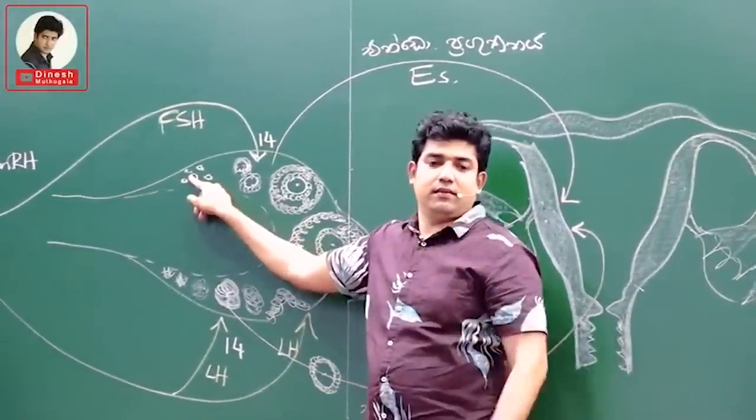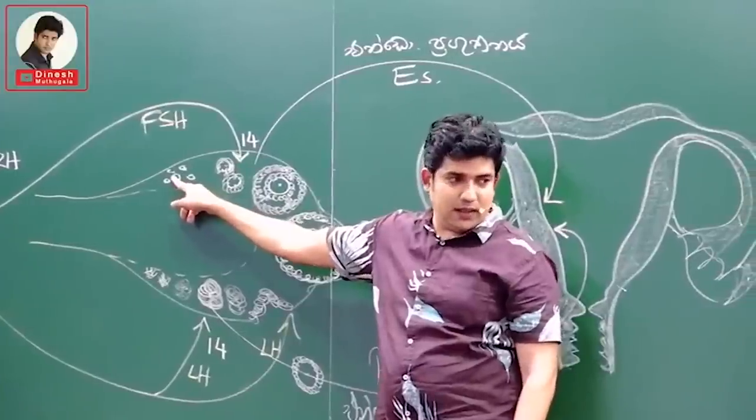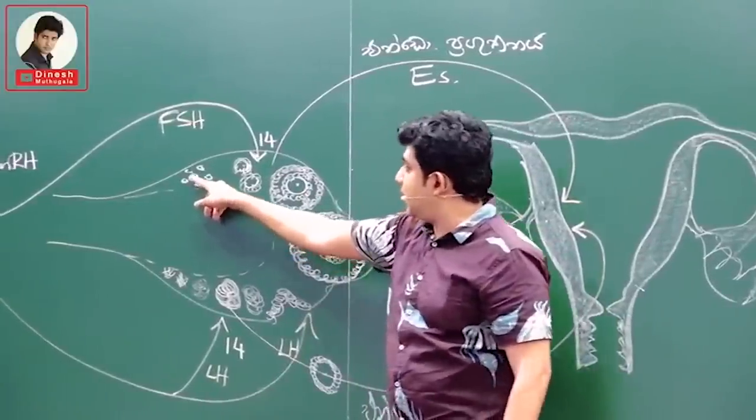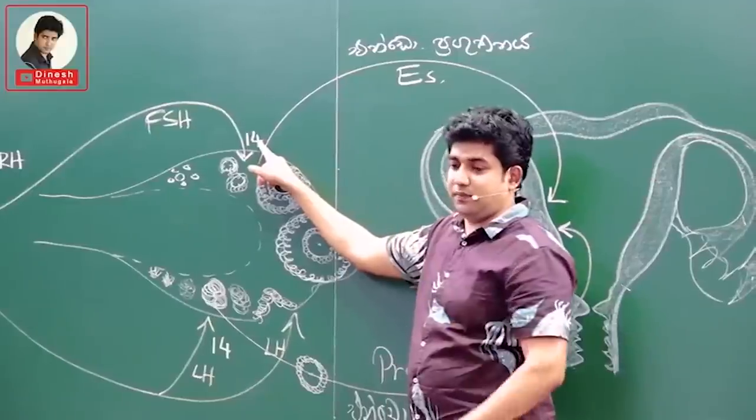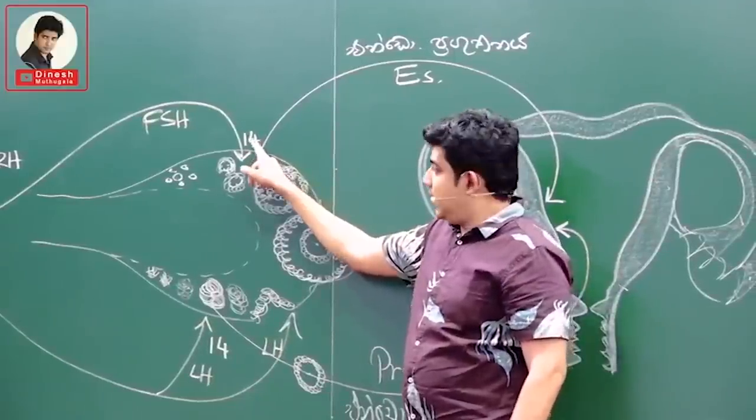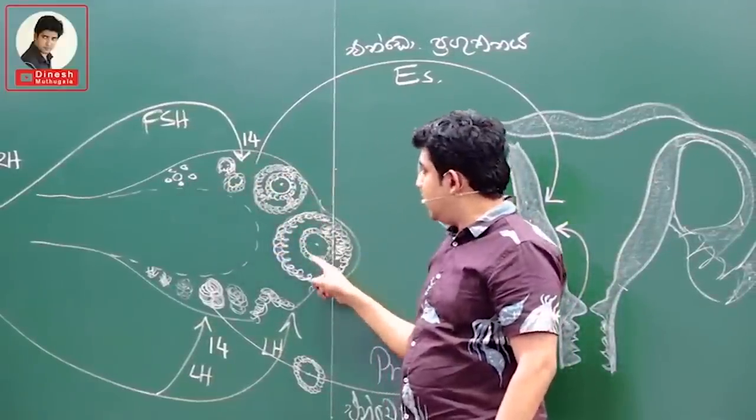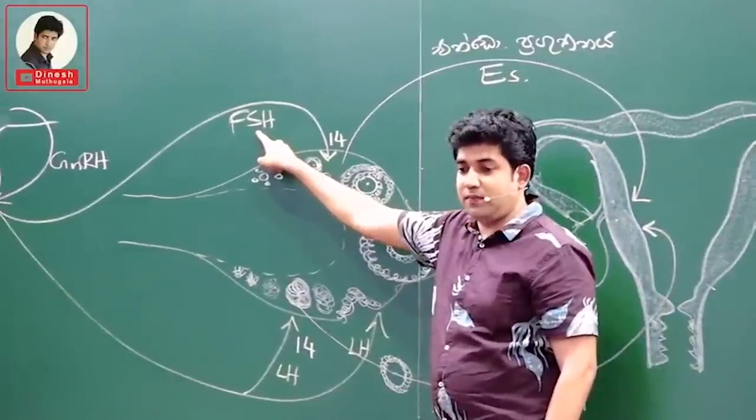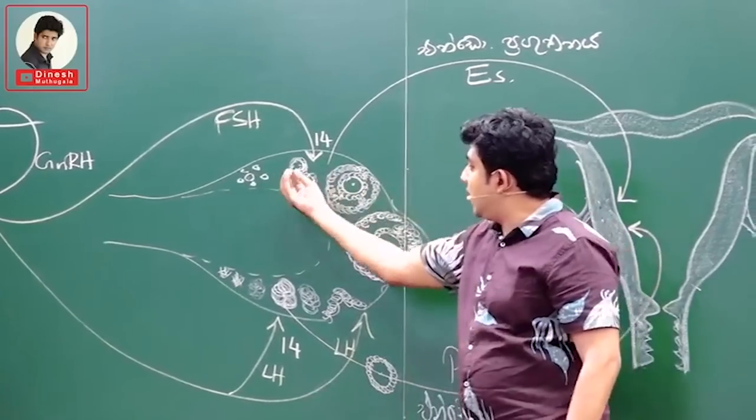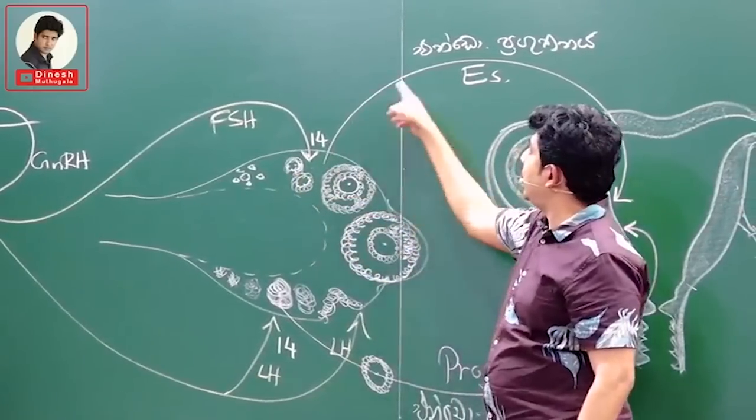Primary follicle - do you know that? Primary follicle, secondary follicle - these phases take different days, about 14 days. This is the hormone that develops here: FSH. This is what causes the follicle to grow. Which hormone causes follicle development?